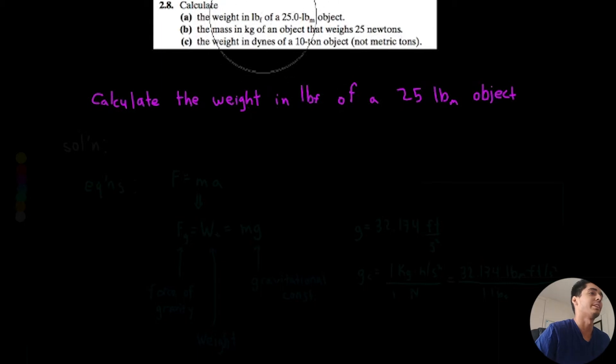So calculate the weight in pounds-force of a 25 pound mass object. So remember mass is the amount of matter in an object and the weight is the force produced by that mass. Before I start, make sure you try this problem by yourself. Work it out, see what you get because you might learn something even if you think you understand it.